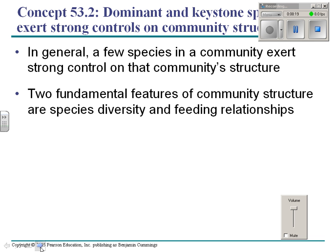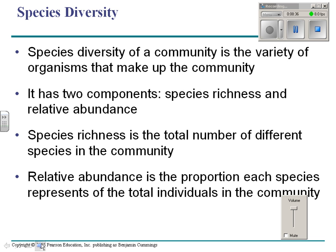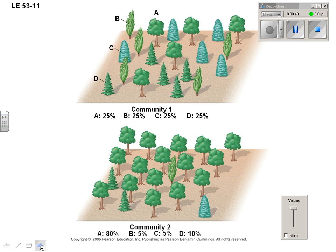We need to talk about a couple more ideas. One is dominant species and keystone species. Usually a few species in a community exert strong controls on its structure. To understand that, we need to understand species richness — all the species in a community — and relative abundance — how much of each there is. Both communities might have the same species richness but very different relative abundance.